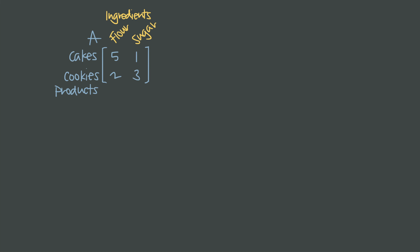Think about it this way. Let's say we own a bakery and we make two products: cakes and cookies. We can organize our ingredient needs in a matrix — we'll call this matrix A. The rows will be our products, cakes and cookies, and the columns will be our ingredients, flour and sugar. Reading this tells us that a cake needs five cups of flour and one cup of sugar, and that our cookie recipe calls for two cups of flour and three cups of sugar.